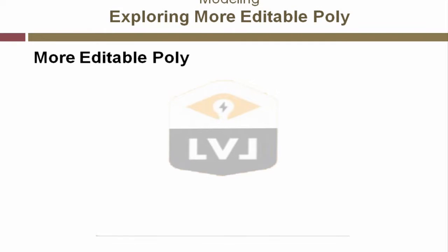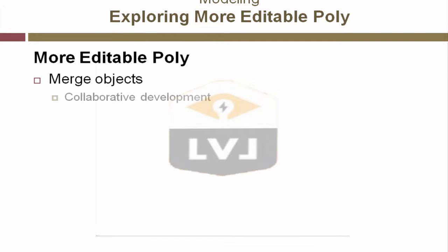Over the next few lessons we're going to learn more about working with Editable Poly objects. But first we need some new objects that we can work on. Think back to the original storyboard that we used for development of this landscape. The first panel contained a hilly landscape with a road and some buildings. There's a reason we've only worked on the landscape in our scene, and that has to do with 3ds Max's ability to be used as a collaborative development tool.